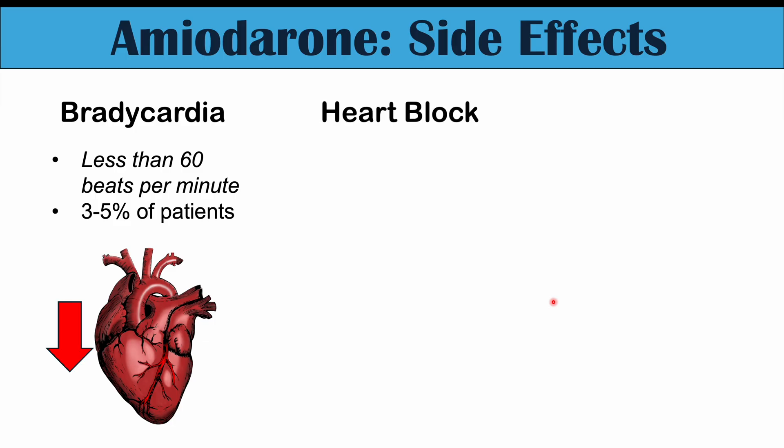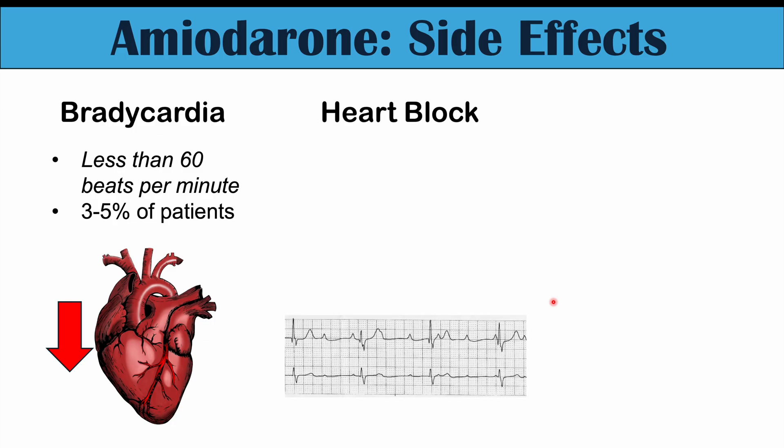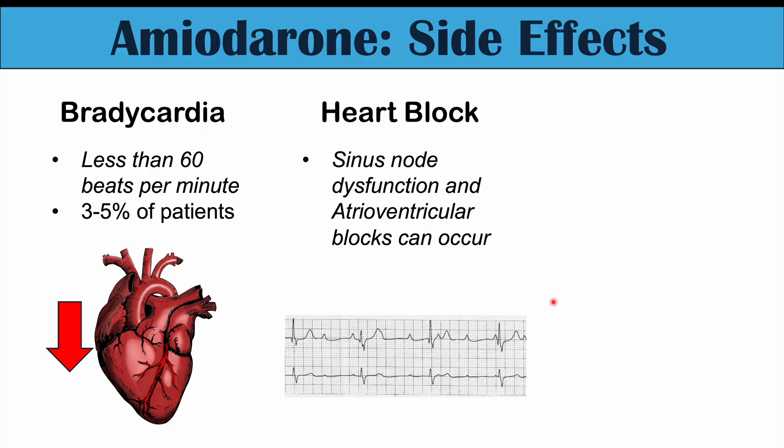We can also see heart block occurring in patients. There are multiple types: sinus node dysfunction and AV blocks, including first degree, second degree, and even third degree blocks. All of these can occur with amiodarone use, affecting up to 5% of patients.